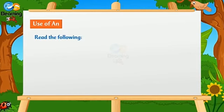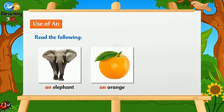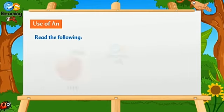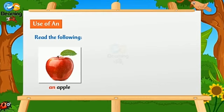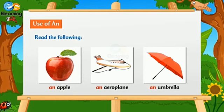Use of AN. Read the following: an elephant, an orange, an inkpot, an apple, an aeroplane, an umbrella.